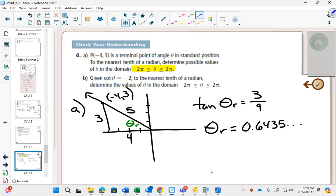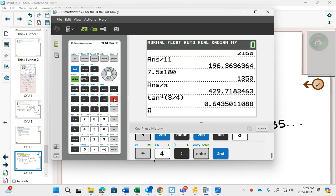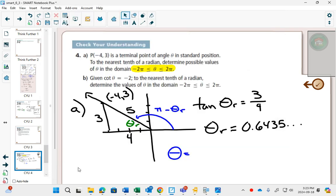In degrees, if you wanted to find this blue angle in the standard position, and it was 36 degrees, what would you do? You would do 180 degrees minus 36 degrees. But now we're thinking in radians. How far is it halfway around? That's pi minus your reference angle. And so that angle theta is going to be pi minus this answer. 2.498. What does it want me to round to? To the nearest tenth? 2.5.